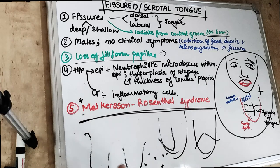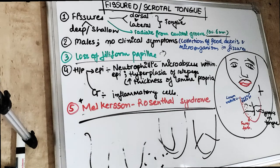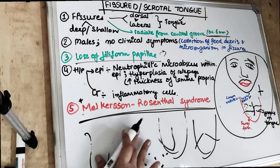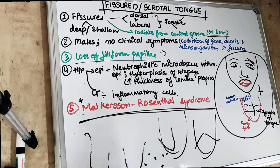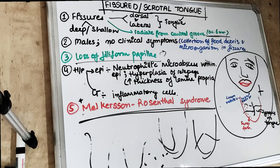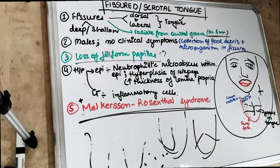There is no treatment required for the fissured tongue. As a patient, you just need to do brushing and keep the tongue clean, so that there is no microorganism growth in the fissures. That is about the fissured or the scrotal tongue.